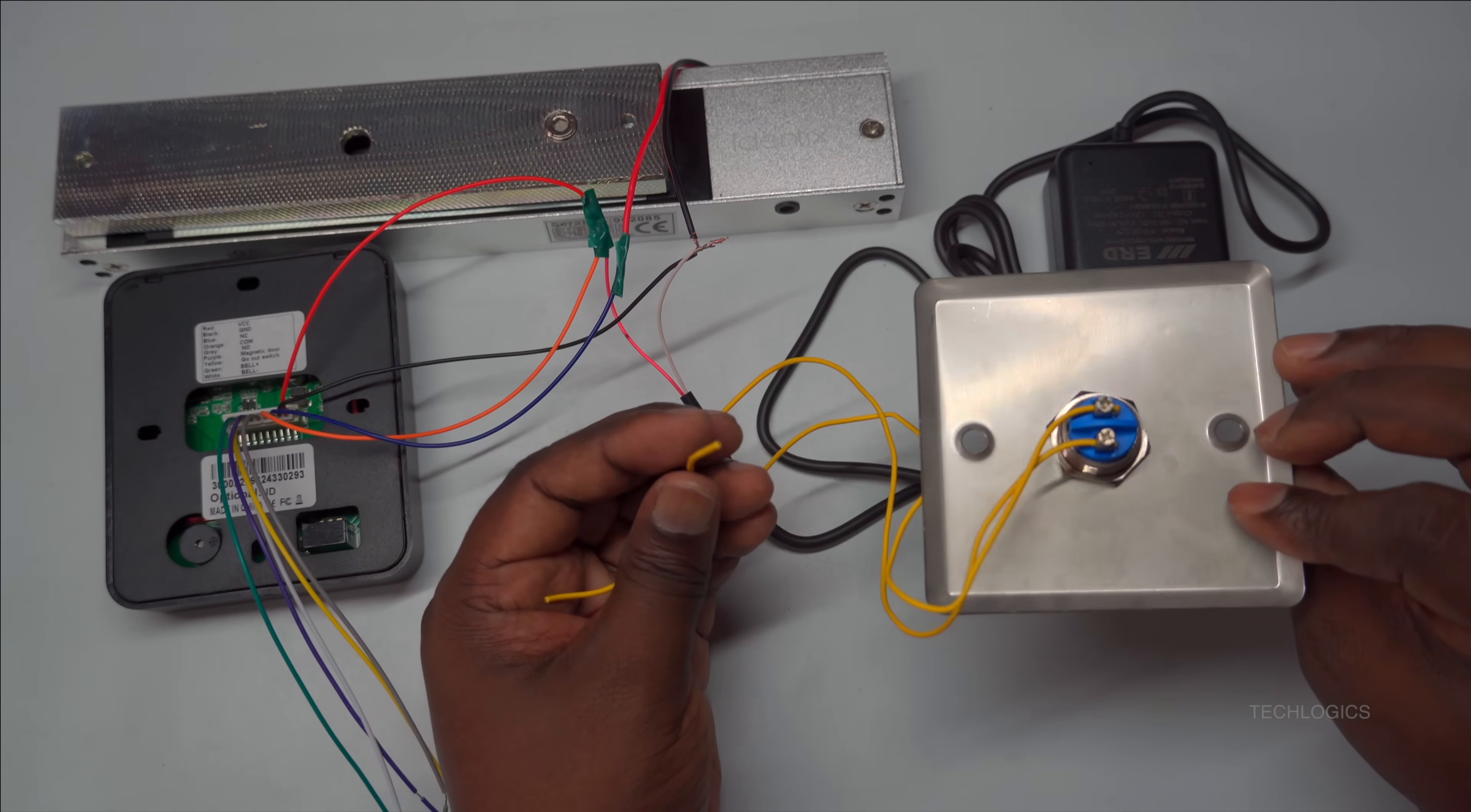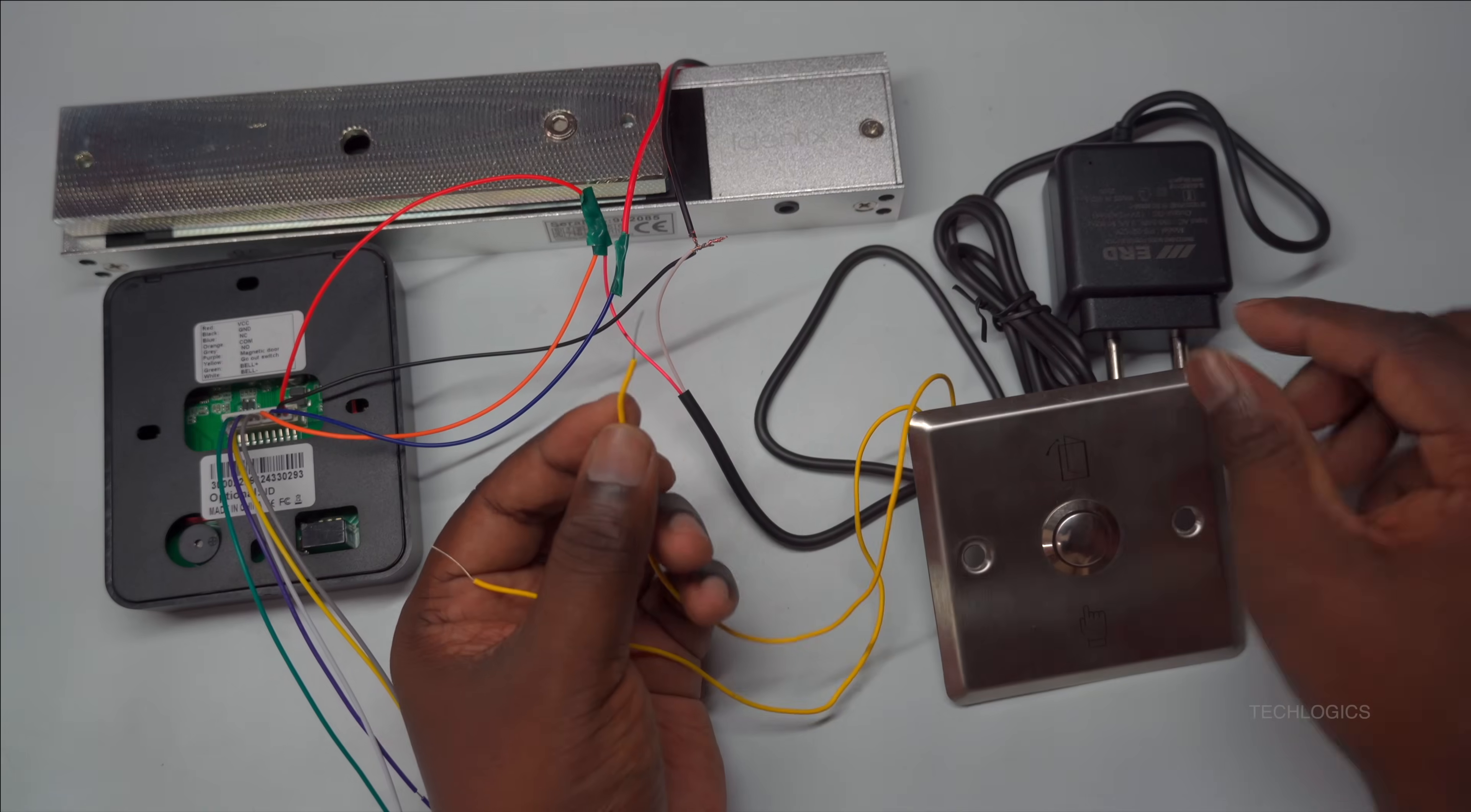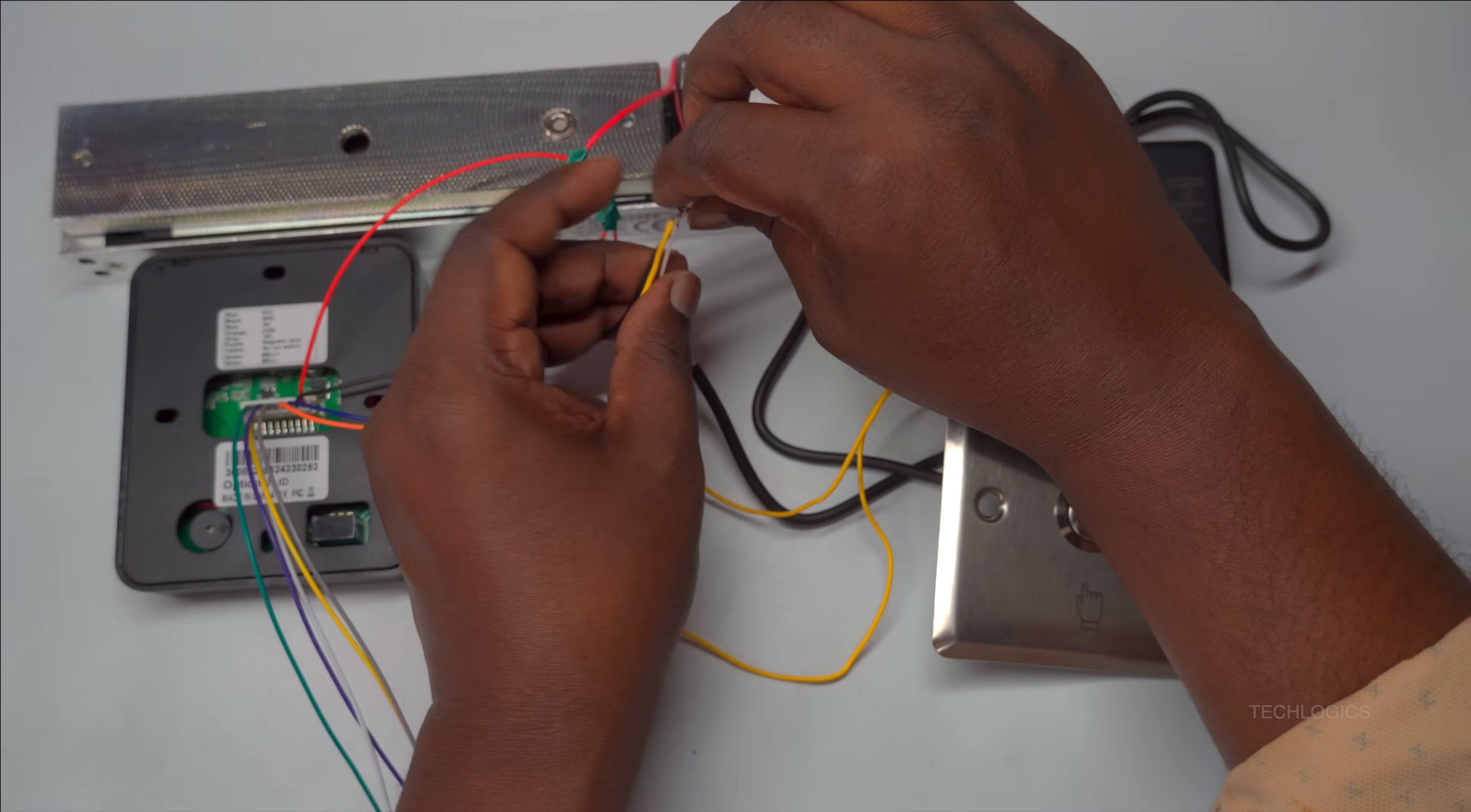Finally, connect the exit switch, which is a push type button with two terminals. One terminal of the exit switch should be connected to the negative GND wire of the DC power supply. The other terminal of the switch should be connected to the go switch or button terminal on the access controller. This setup allows users to press the exit switch to release the lock and exit safely. Make sure all connections are secure for proper operation.